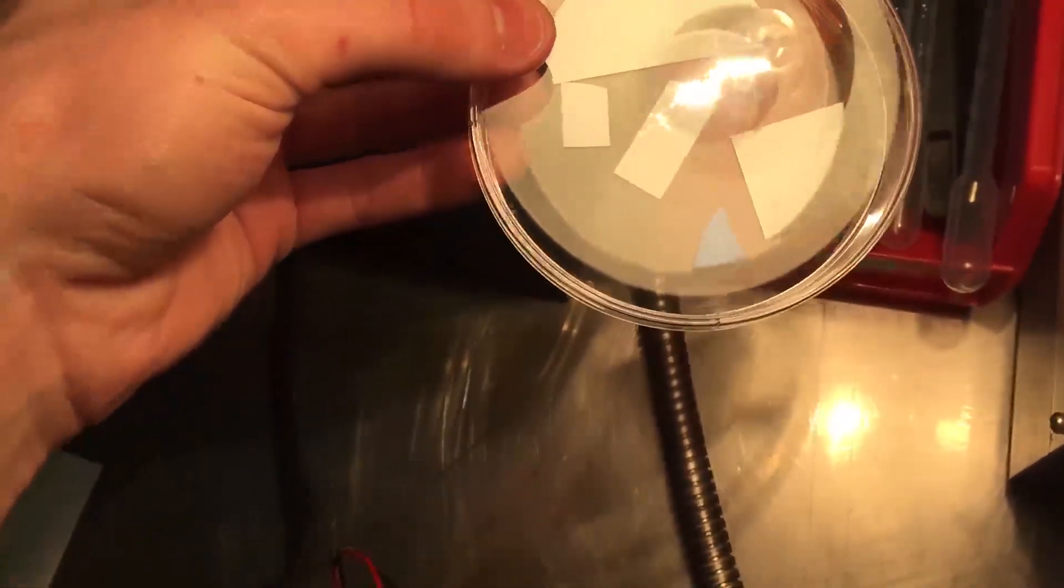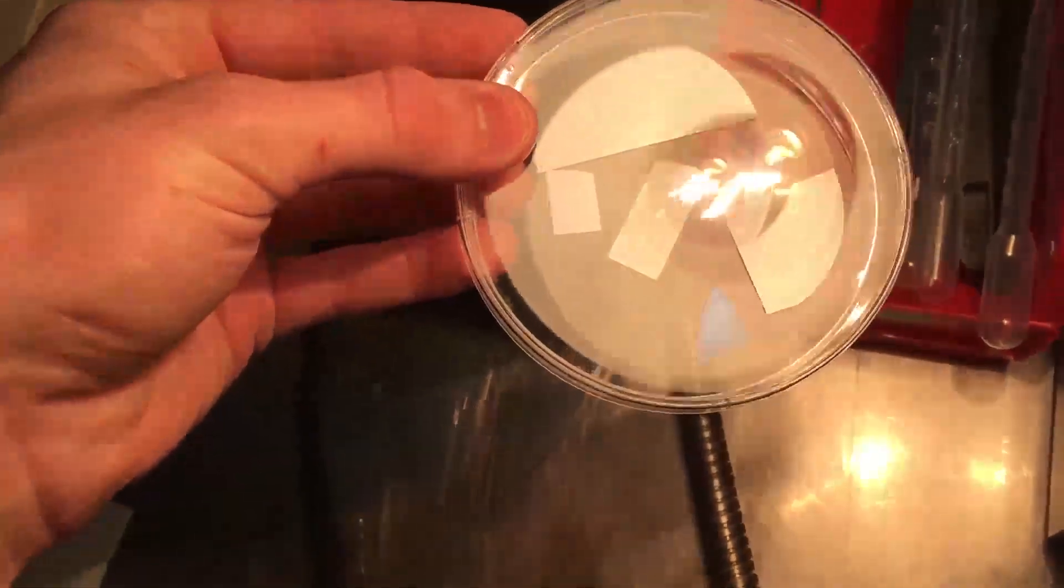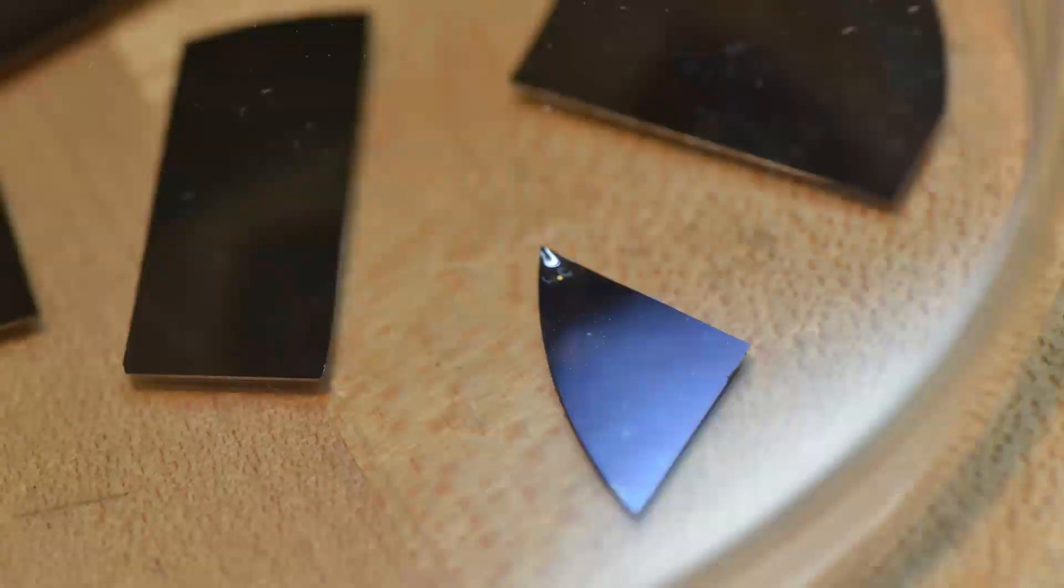As you can see there are five pieces and one of them is tinted much more blue than the rest of them. That's the one that I put in a furnace for a few hours and pumped water vapor into it and that's how you grow the oxide.